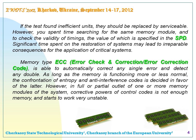Significant time spent on the restoration of systems may lead to irreparable consequences for critical system applications. Memory type ECC — error check and correction code — is able to automatically correct any single error and detect any double error. As long as the memory is functioning more or less normally, the confrontation of entropy and anti-interference codes is decided in favor of the latter. However, in full or partial failure of one or more memory modules, the corrective powers of control codes are not enough, and memory starts to work very unstably.